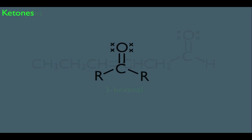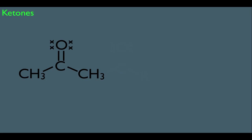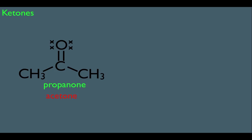Now let's talk about the nomenclature of ketones. Ketones differ from aldehydes because they have carbonyl groups with alkyl R groups on both sides. Starting with the simplest example, a 3-carbon ketone: if it were an alkane it would be propane, but instead we call it propanone — we change the E ending to -one because the molecule is a ketone. The common name for this molecule, which you've probably heard before, is acetone. Ketones also have another alternative method called the derived name; the derived name of this molecule is dimethyl ketone.